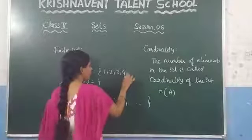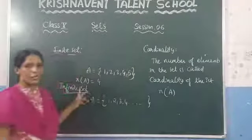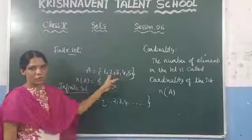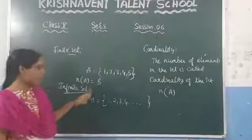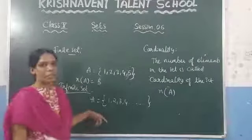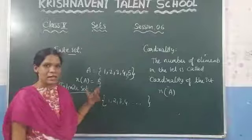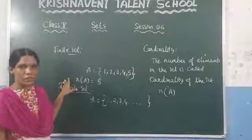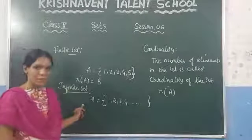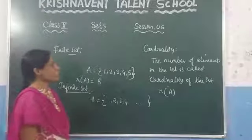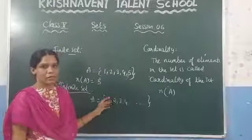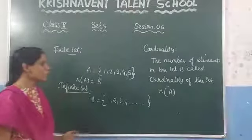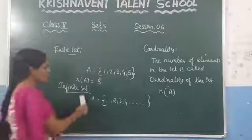Suppose they have given a set with 5 elements and ask the cardinality of set A. Then how many elements are there? 5. You can count: 1, 2, 3, 4, 5. The cardinality of set A is 5. The cardinality of an infinite set will be discussed in higher classes. Now, what is meant by the finite set? If it contains finite elements it is a finite set, and if infinite elements it is an infinite set. Cardinality is denoted by N(A).